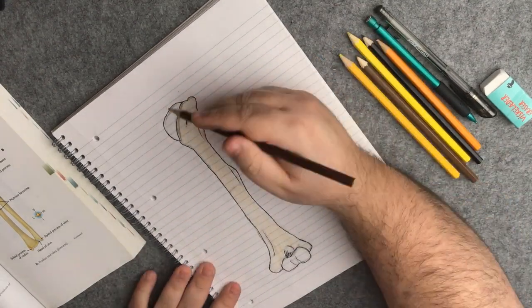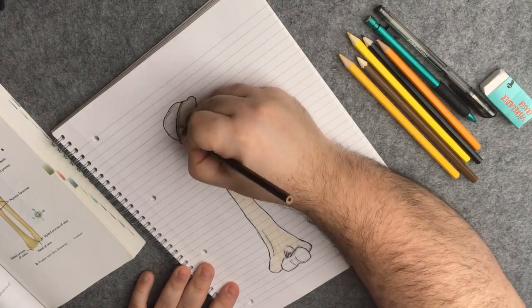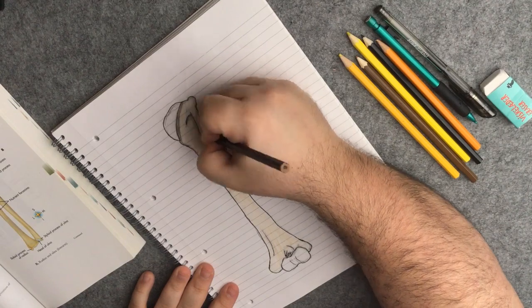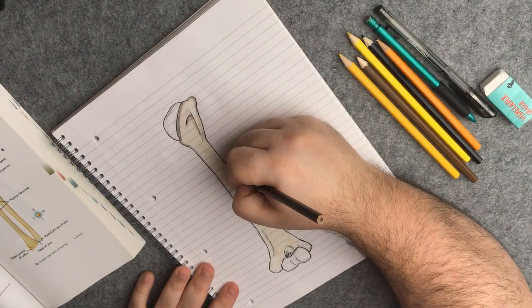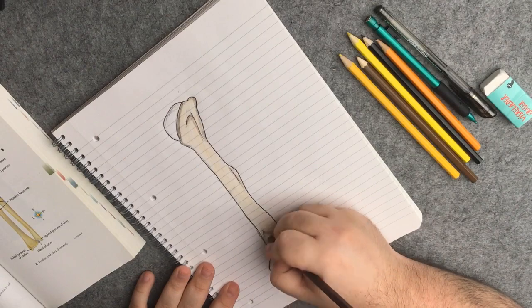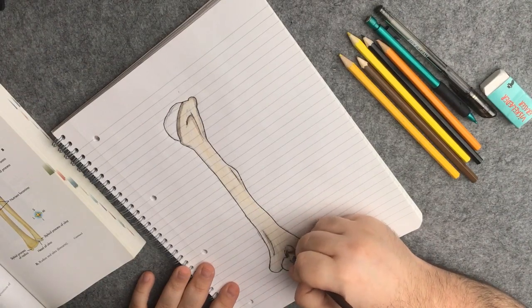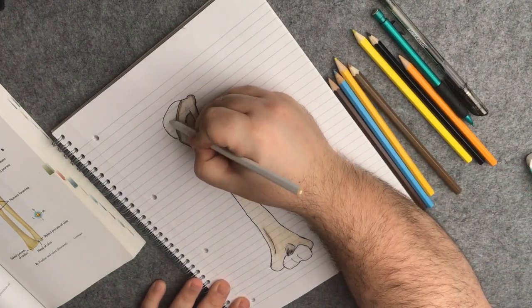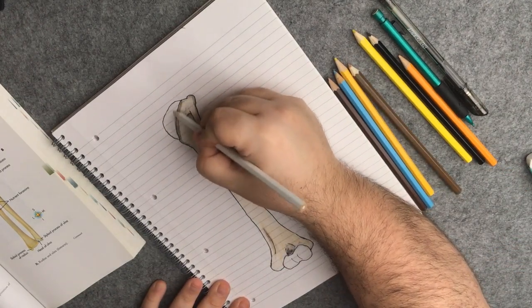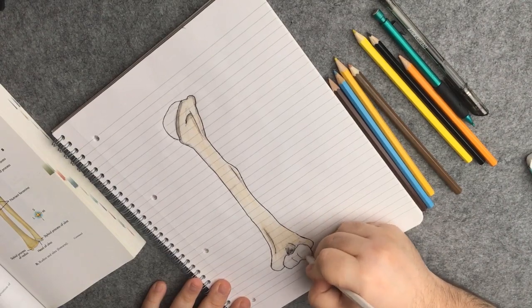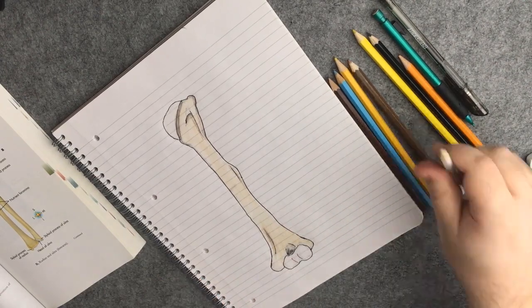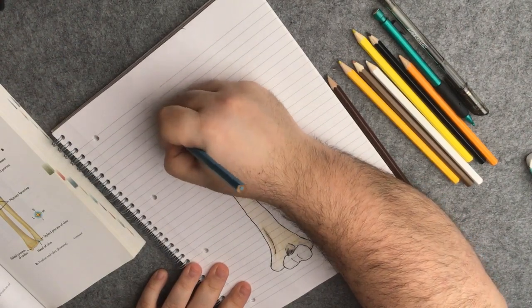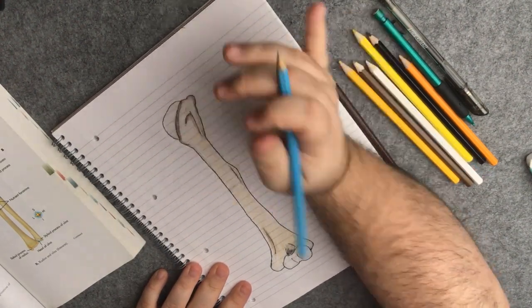Then I go in with a darker brown to highlight some of the landmarks and add a bit more contour and depth to this bone. For the articular cartilaginous surfaces, I use a white pencil first, which in hindsight was not the best idea. Because then I try to add a bit of blue and it does not pick up as I wish it would. Maybe it has to do with the fact that these pencils are a bit crappy.